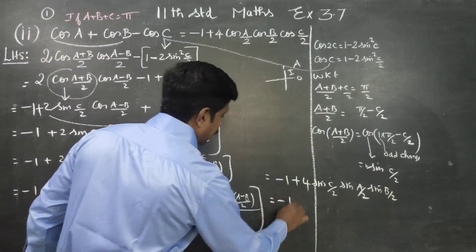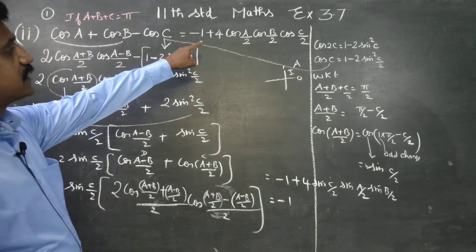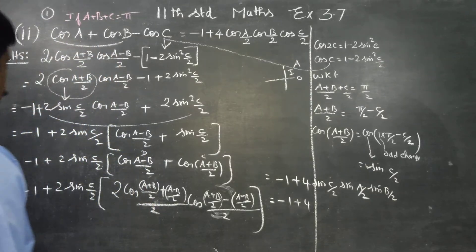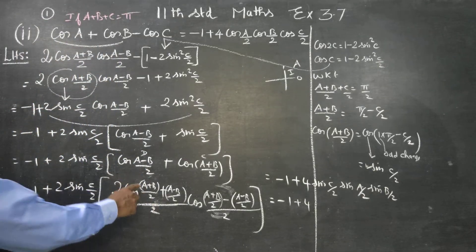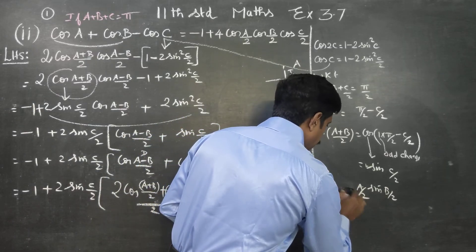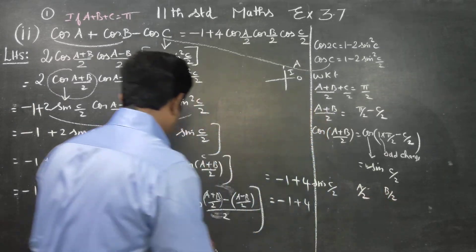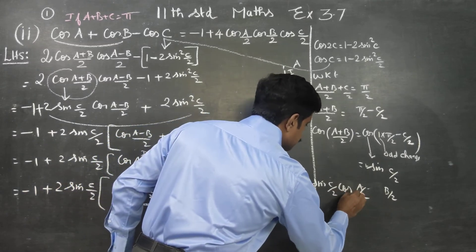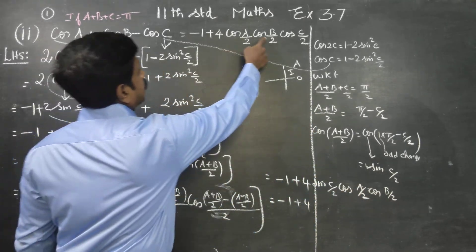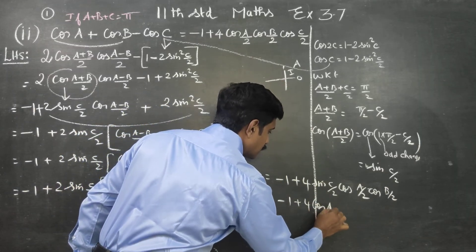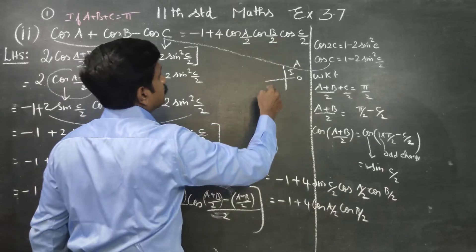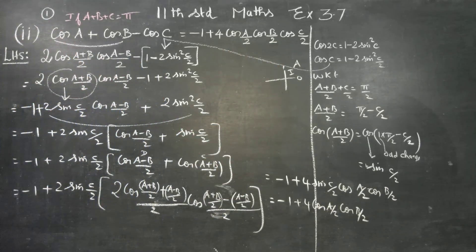Sorry, this is cos — I have written sin wrongly. It is cos. This is cos A/2, cos B/2, cos C/2. Sin is equal to C/2. I will check the answer once again: sin C/2. Yes — book question confirms it is sin(C/2).